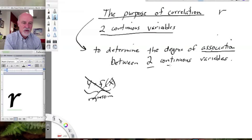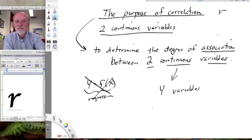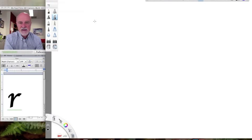So with correlation, we have two continuous variables, but they're both considered y variables, and we're just looking at the association between them. So let's give an example. Let's say we have two y variables, y1 and y2, and we've measured both of them on a bunch of individuals so we can plot the points.